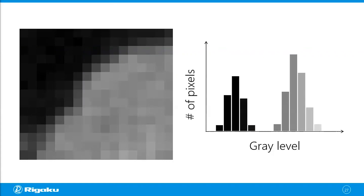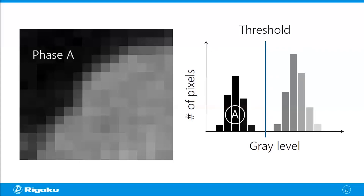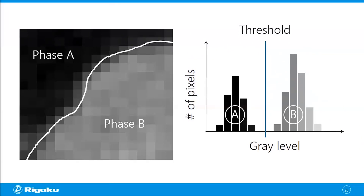When you look at this histogram you realize there are two peaks: one for the dark pixels and one for the lighter pixels. This means you can set a threshold between those two peaks and say all pixels on the left side belong to phase A — the dark pixels — and map them back to the original image. You can do the same thing for the lighter gray pixels, phase B, and map them back. This is how you can segment an image into two different phases.